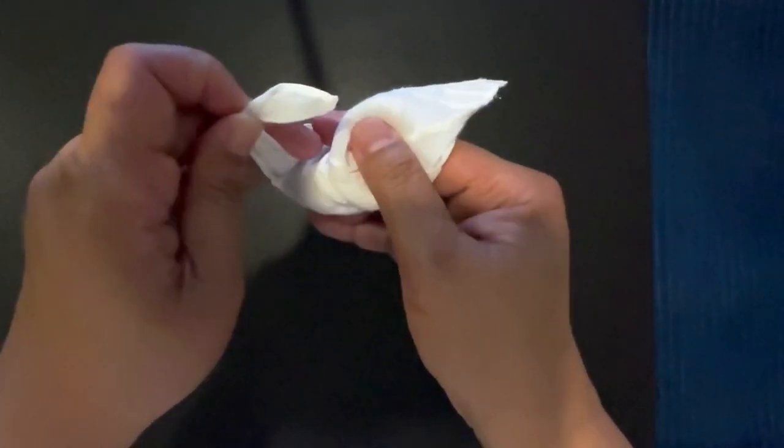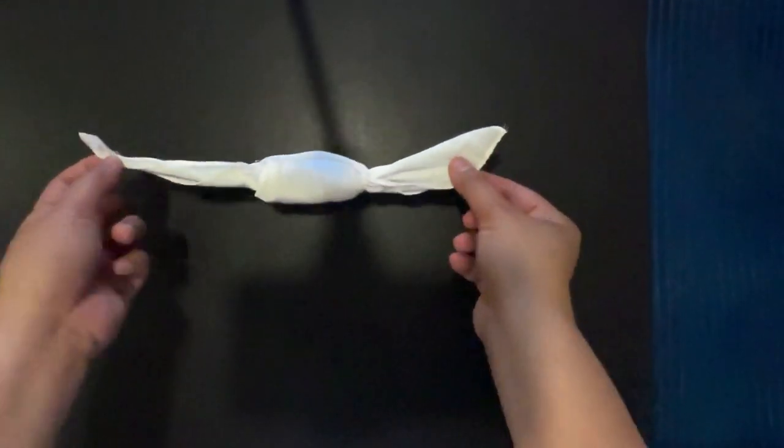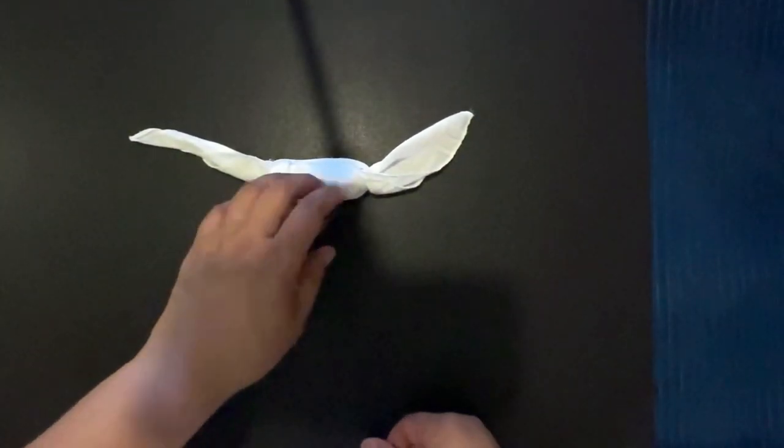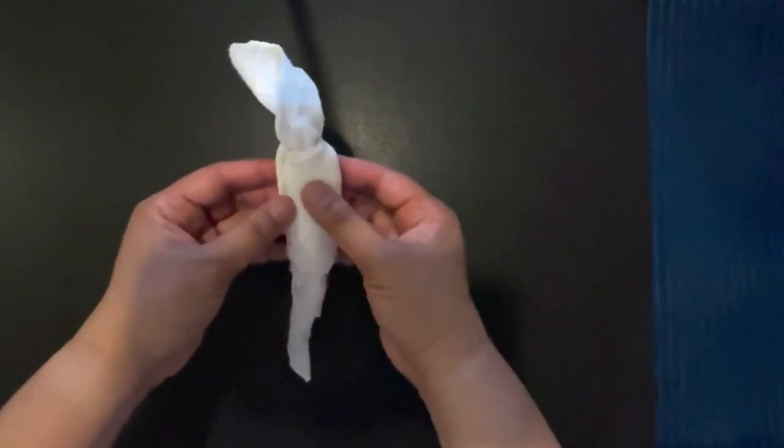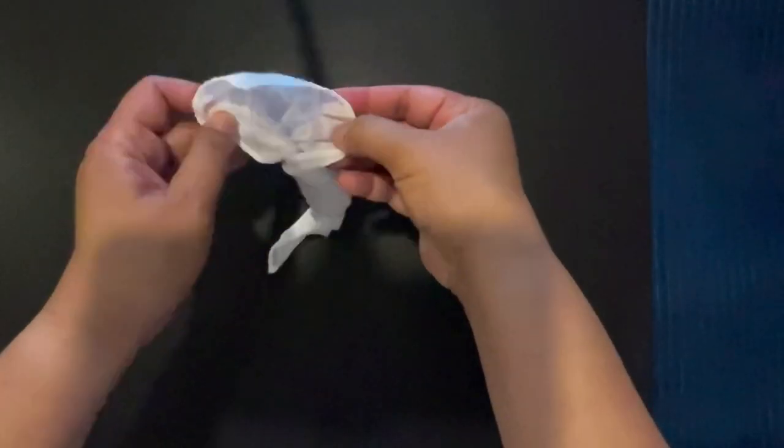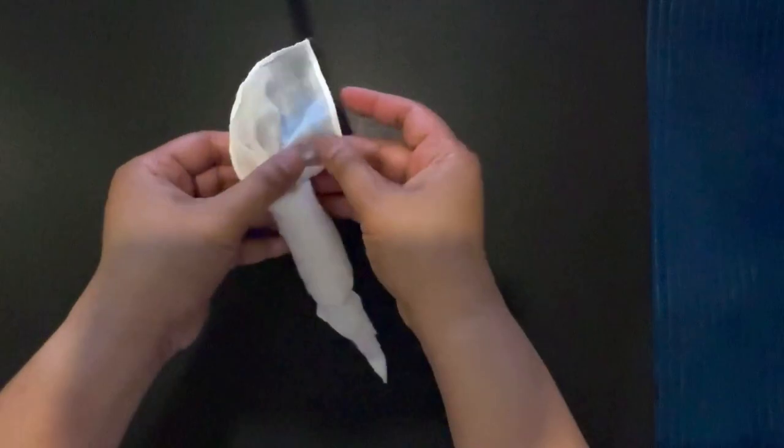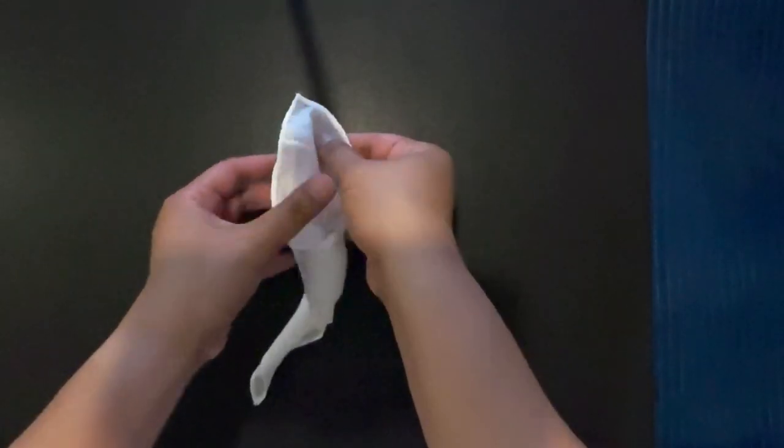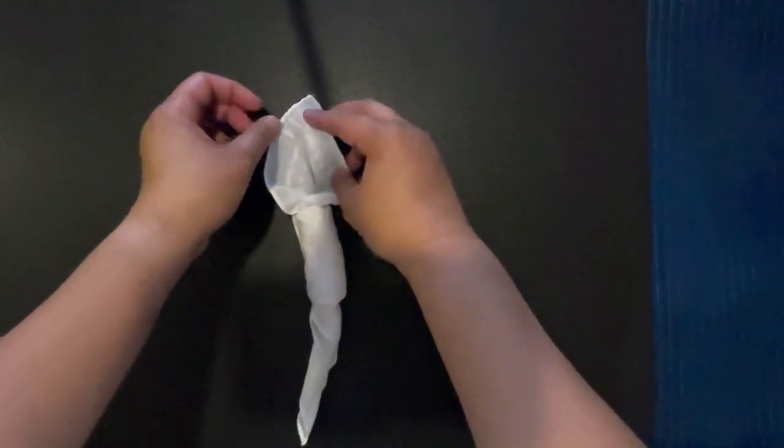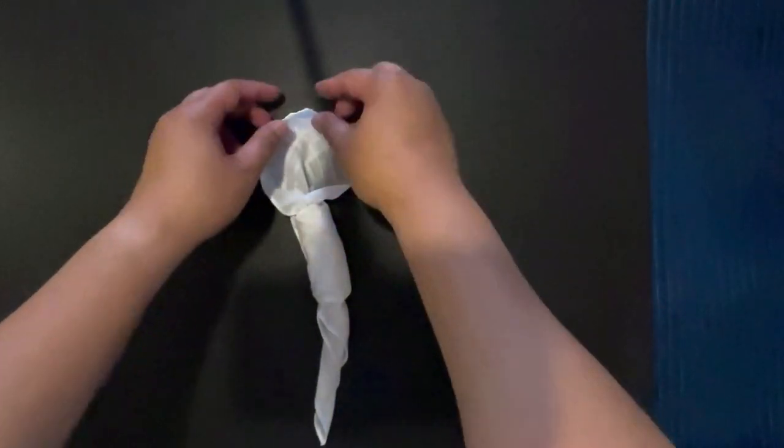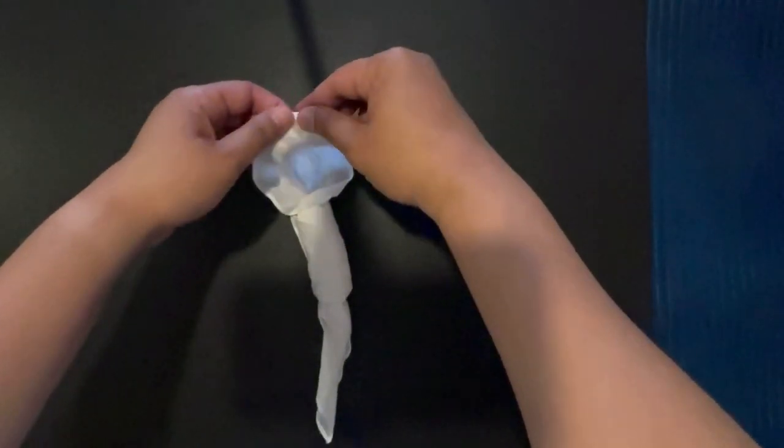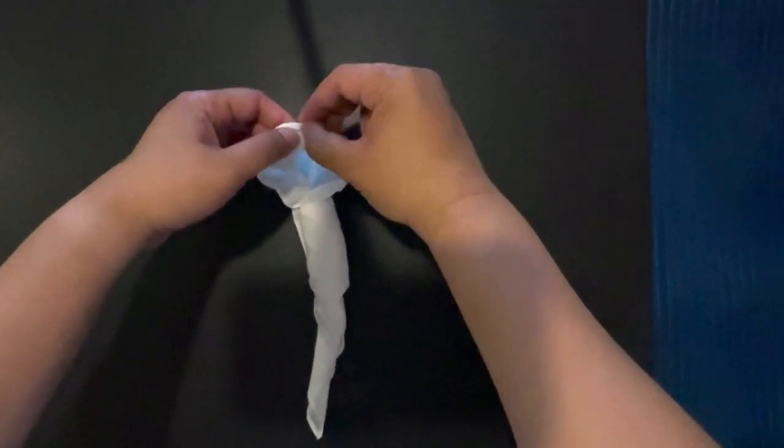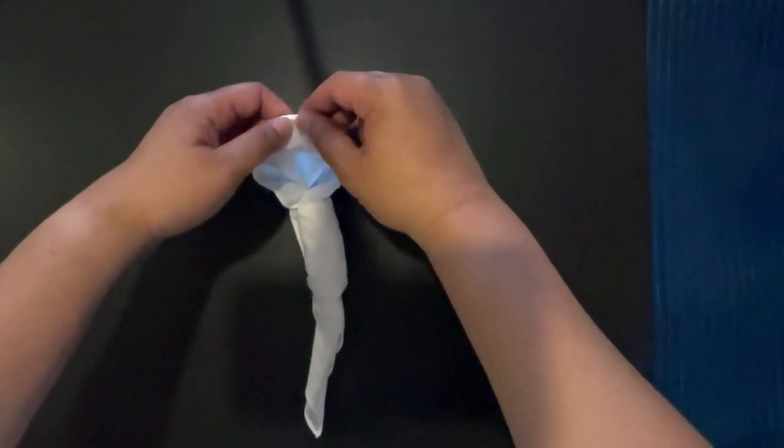One of them is the tail and one of them will be the head. This one will be the head. From that corner, slowly roll it again, not too tight and not too loose.